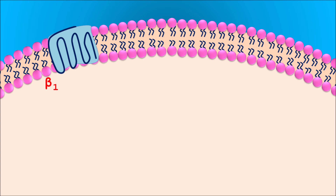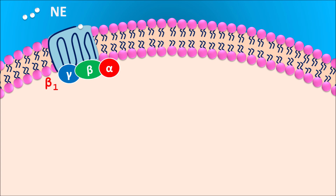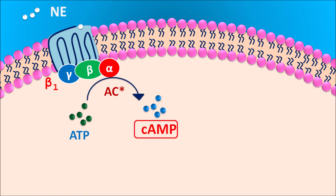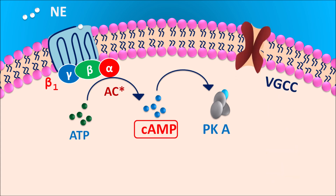Now let us see how this drug acts. On the heart, beta-1 receptors are present — these are G protein-coupled receptors coupled with alpha, beta, and gamma subunits. Catecholamines like norepinephrine can activate these beta-1 receptors. When norepinephrine binds to these receptors they are activated, resulting in stimulation of the adenylyl cyclase system. This adenylyl cyclase converts ATP into the secondary messenger cyclic AMP. Cyclic AMP then activates a group of enzymes called protein kinase A. These phosphorylating enzymes can target voltage-gated calcium channels on the heart; protein kinase A interacts with the alpha subunit of these channels causing phosphorylation, opening the channel and allowing calcium entry.